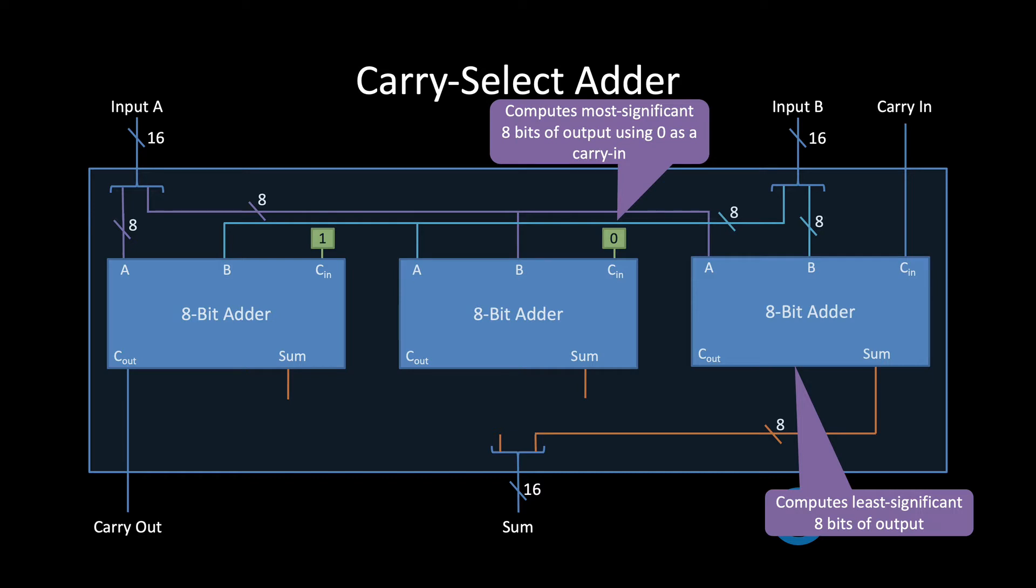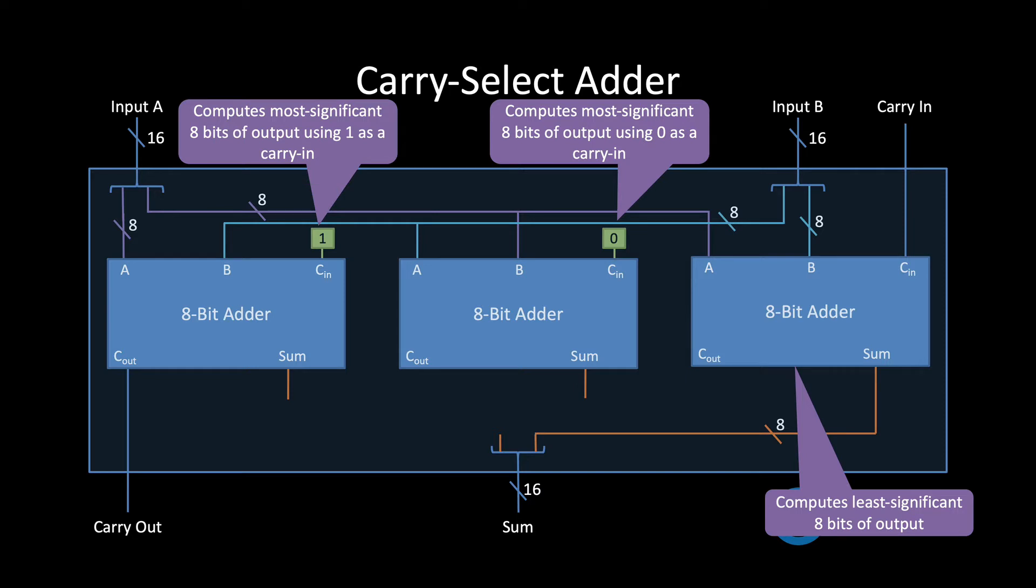This 8-bit answer in the middle computes the most significant 8 bits of the 16-bit answer using a carry-in of zero. This adder can also begin processing immediately because it always uses zero as a carry-in. It doesn't wait for the carry out from the lower rightmost adder. Similarly this 8-bit adder on the left computes the most significant 8 bits of the answer using a carry-in of 1. Again it doesn't wait for the carry out from the lower adder so it can also begin processing immediately.